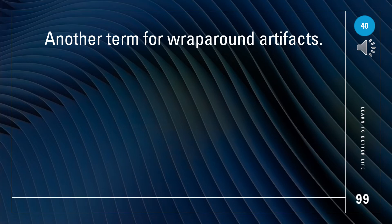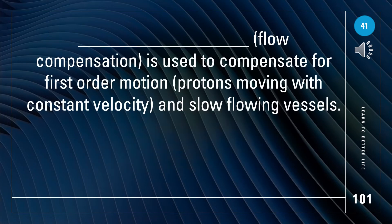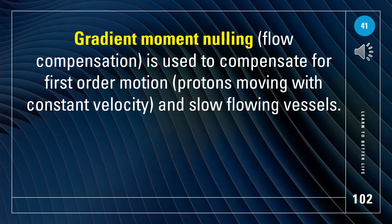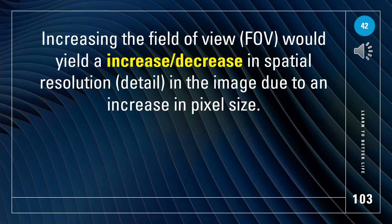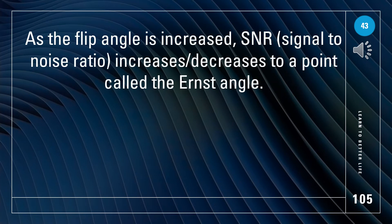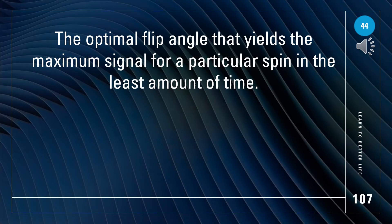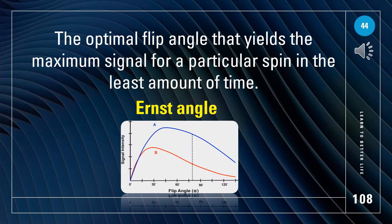Another term for wraparound artifacts is aliasing. Another name for flow compensation — used to compensate for first-order motion, protons moving with constant velocity, and slow-flowing vessels — is gradient-moment nulling. Increasing the field of view decreases spatial resolution and detail in the image due to an increase in pixel size. As the flip angle is increased, SNR increases to a point called the Ernst angle.